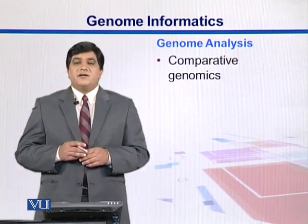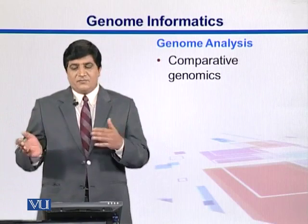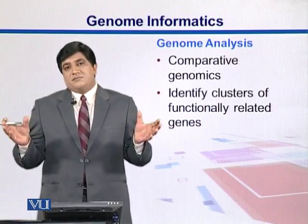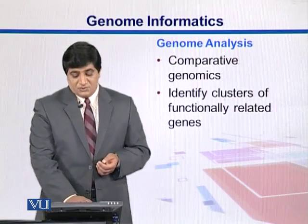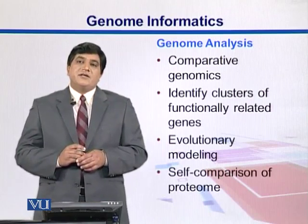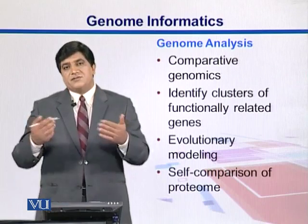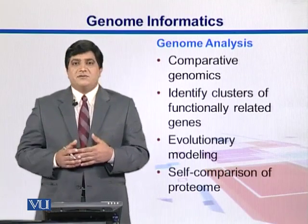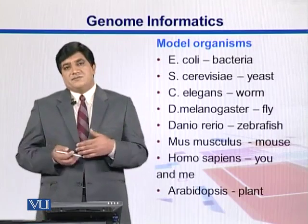We can also do comparative genomics, where we take one genome, compare it with another, and find comparative features — what's present in one but not the other, and what is shared. We can identify clusters of functionally related genes that may have similar structures, similar sequences, and similar functions, giving us ideas about evolution. We can also do evolutionary modeling, and for finding duplicated genes within the same organism, we compare the proteome — the whole collection of proteins derived from a genome — with itself.